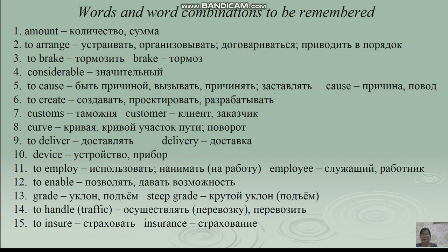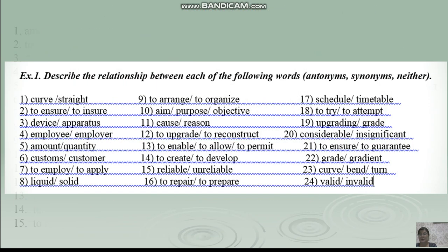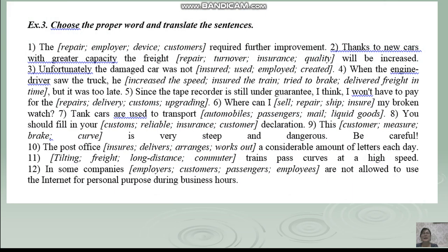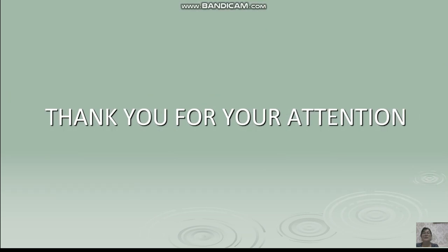We come to the end of our lesson. I want you to have some tasks as homework. Exercise 1: describe the relationship between each of the following words — antonyms, synonyms, neither. And Exercise 3: choose the proper word and translate the sentences. Thank you for your attention. Goodbye, see you next lesson.